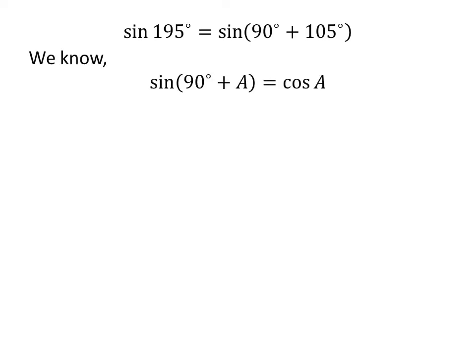We know the trigonometry identity: sine of 90 degrees plus A is equal to cosine of A. The proof of this trigonometry identity is explained in the video appearing in the upper right corner of this video. The link of the video is also given in the description section. So, sine of 195 degrees is equal to cosine of 105 degrees.